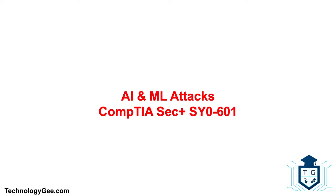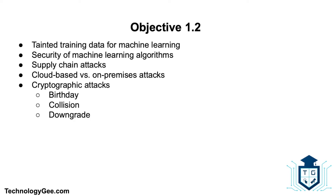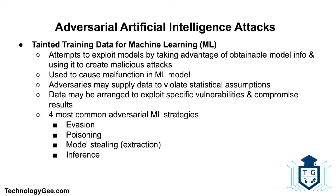What's up everybody, this is your boy Tech G back with another video to help you successfully pass the CompTIA Security+ 601 certification. In this video you're going to learn about adversarial artificial intelligence attacks such as tainted training data for machine learning and the security of machine learning algorithms. In addition, you will learn about supply chain attacks, cloud-based versus on-premises attacks, and cryptographic attacks such as birthday attacks, collision attacks, and downgrade attacks.